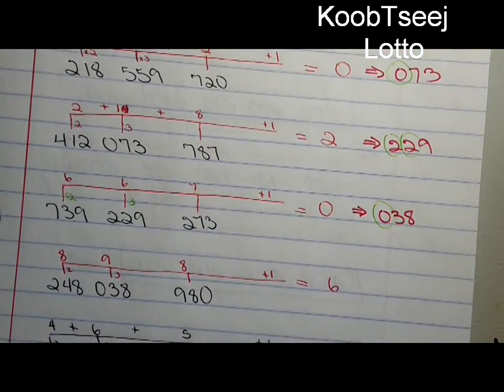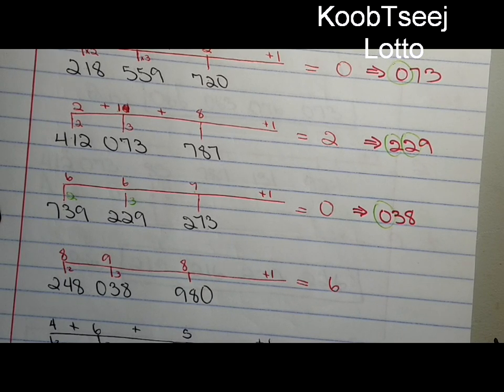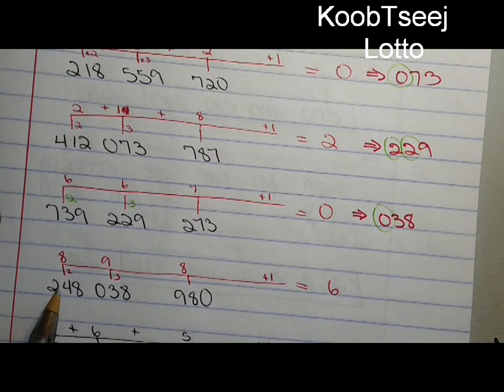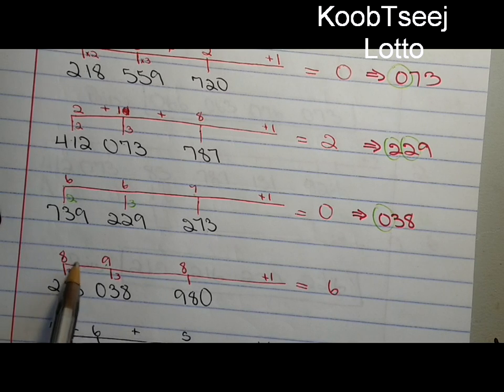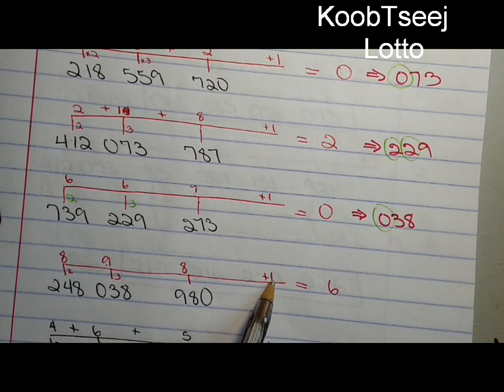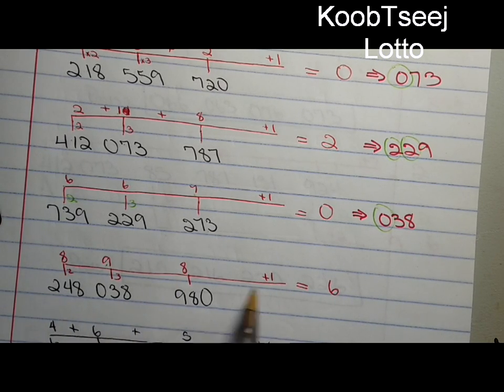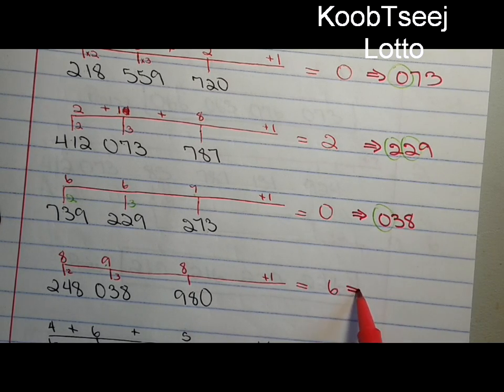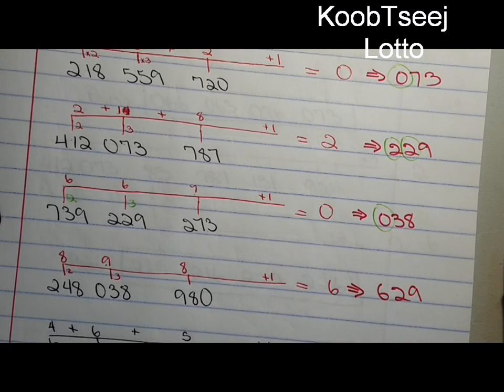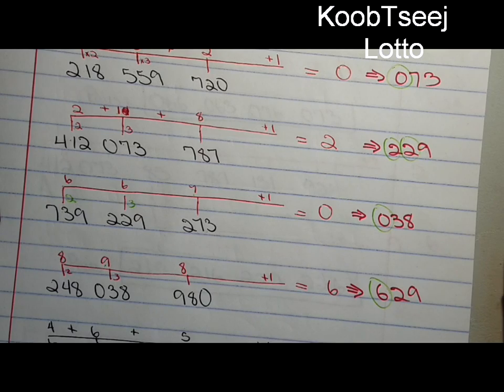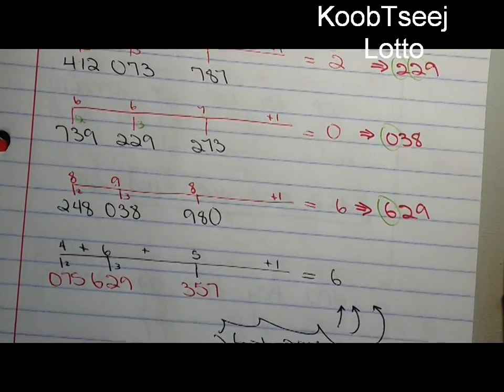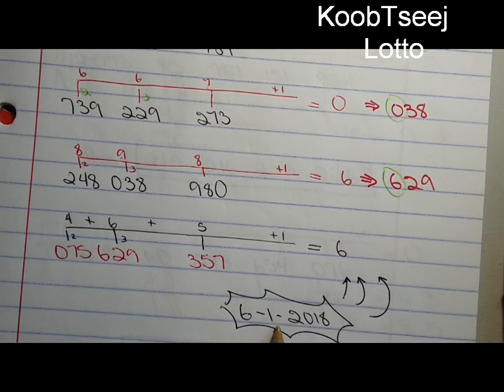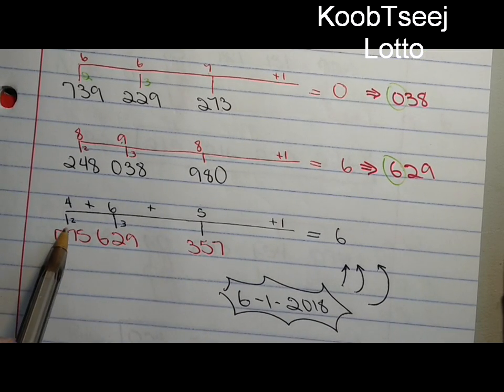Next example. The result is 26. So down there, the number is six two nine. This is going to be June 1st, June 1st right there.